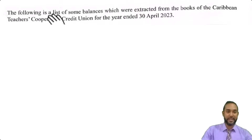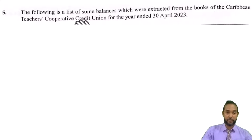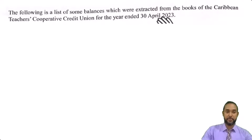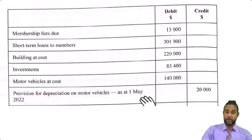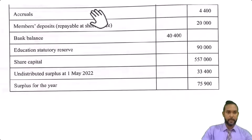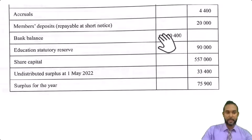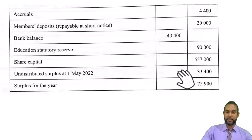Okay, so let's take a read. The following is a list of some balances which were extracted from the books of the Caribbean Teachers Cooperative Credit Union for the year ended 30 April 2023. So we have membership fees due, short-term loans to members, building at cost, investments, motor vehicles at cost, the existing provision for depreciation on the motor vehicles — not including the current year's depreciation. Then accruals, members deposits repayable at short notice — these are current liabilities — bank balance, education statutory reserve, share capital, undistributed surplus as of 1st May 2022 (the opening surplus), and then the current surplus for the year.